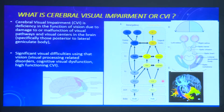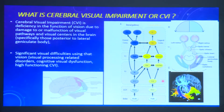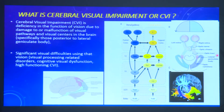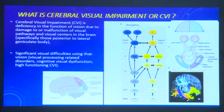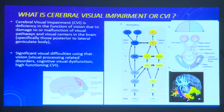So what exactly is CVI? Cerebral visual impairment is a deficiency in the function of vision due to damage or malfunction of the visual pathways or of visual centres in the brain, especially posterior to the lateral geniculate body. So here we have the occipital cortex — if there is damage here, or in the parietal lobe, the temporal lobe, or the interconnecting pathways, it is not only vision which is affected but significant visual difficulties are seen.